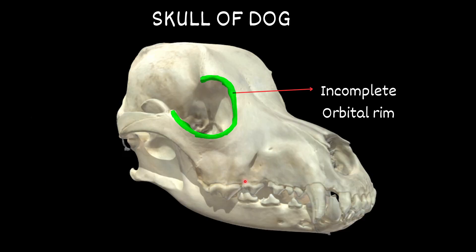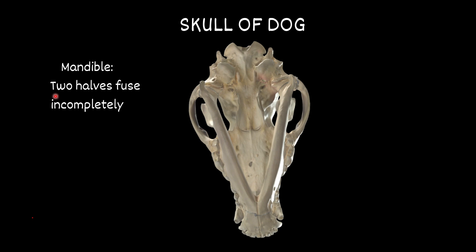The orbital rim is incomplete. The two halves of the mandible are fused incompletely.